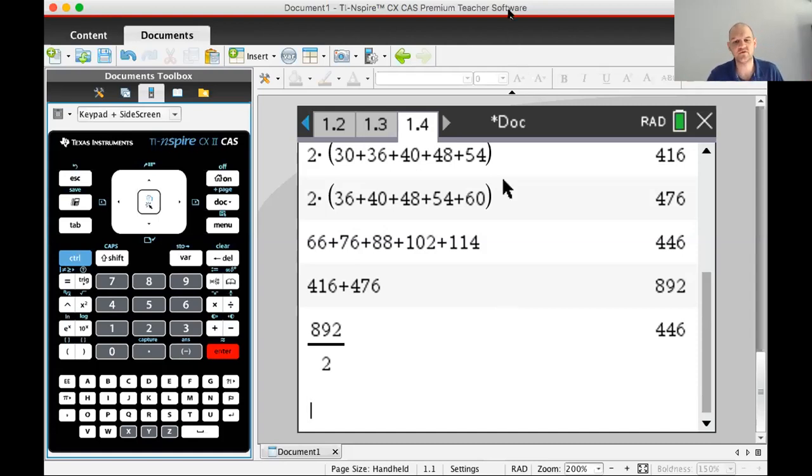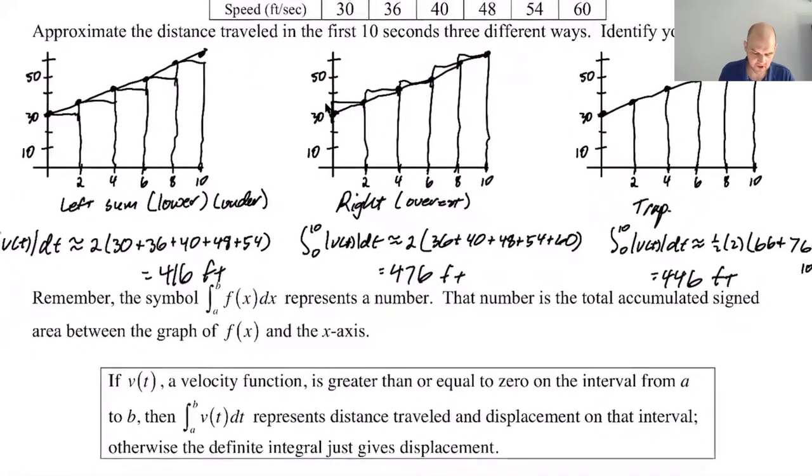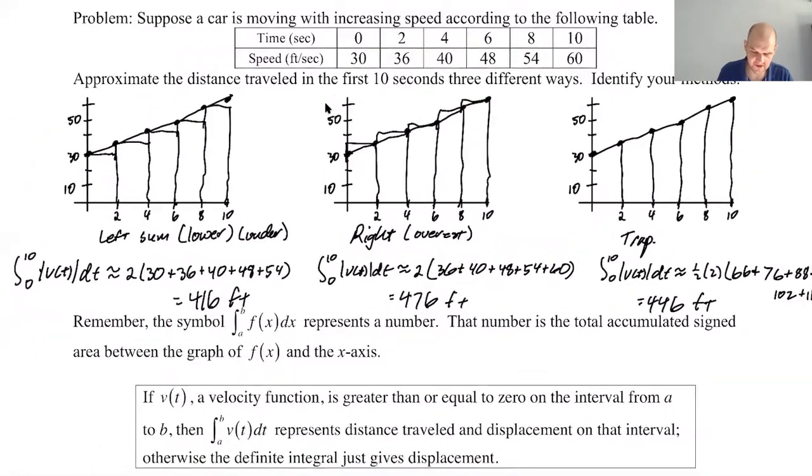The trapezoidal sum is actually the average of the left sum and right sum. That is a fact that is always going to happen. Let's go back to the notes. So I actually use that sometimes. Like if I've already found the left and the right and someone says what's the trapezoid, just add them together and divide by two. If you found the trapezoid and the left you can use that to find the right. If you found the trapezoid and the right you can use it to find the left. So it's a thing that you end up doing. It's a very cool connection.